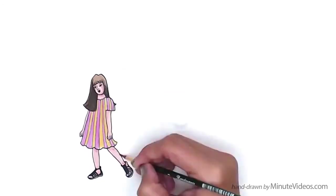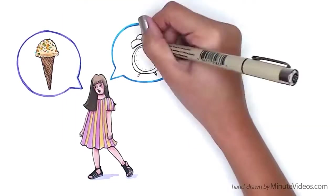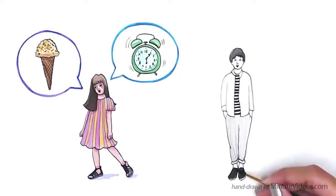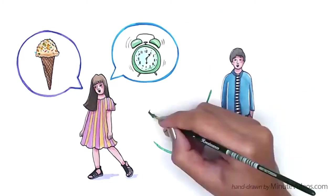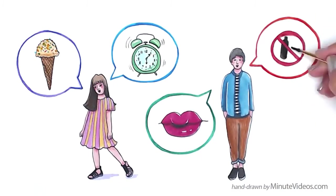Younger children might ask, Do you like vanilla ice cream? Or, do you like to get up early? Older players are often more personal, like, did you ever kiss anyone? Did you ever do something your parents would not allow?